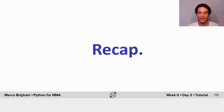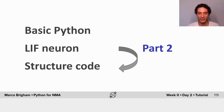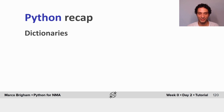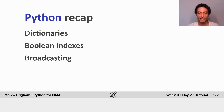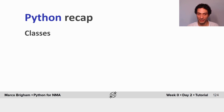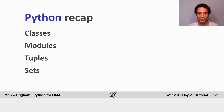Let's recap today's lecture. We continued working on the LIF neuron and learned how to structure code. We saw dictionaries, boolean indexes, broadcasting of NumPy arrays, functions, classes and objects, modules, tuples, and sets.